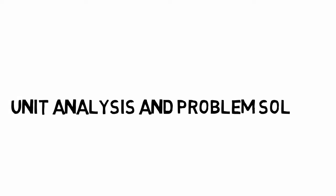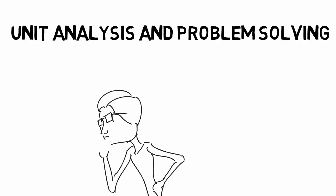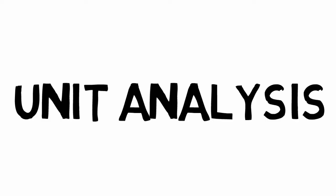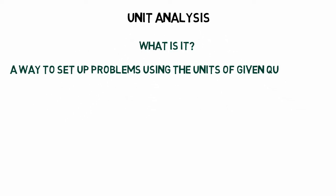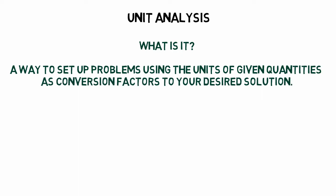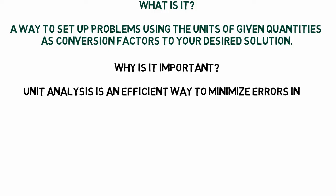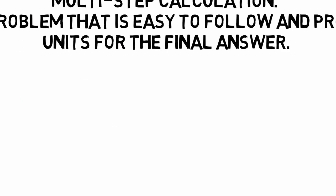In this video we will discuss two valuable tools for understanding chemistry questions: unit analysis and systematic problem solving. Both of these are generally applicable to quantitative problems but are extremely useful for solving chemistry questions. Unit analysis is a method of arranging problems using the units of given quantities as conversion factors, and is important because it minimizes errors in multi-step calculations. All chemical calculation problems should be solved using unit analysis.